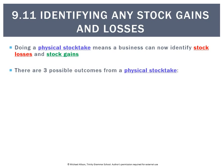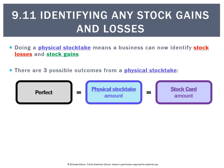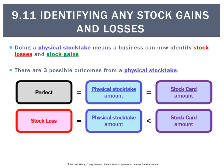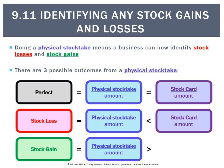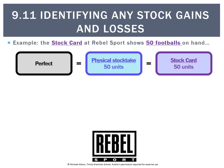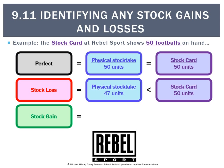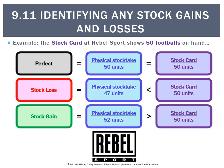There are only three possible outcomes from a stock take. It could be perfect — the physical stock take amount equals the amount on the stock card. There could be a stock loss — we count less than the stock card, meaning we have less stock than there should be. Or we could have a stock gain — we count more units than the stock card says there should be. For our example: perfect means the stock take shows 50 and matches the stock card; a stock loss means we counted only 47; and a stock gain means we counted 52 units when we were only meant to have 50.